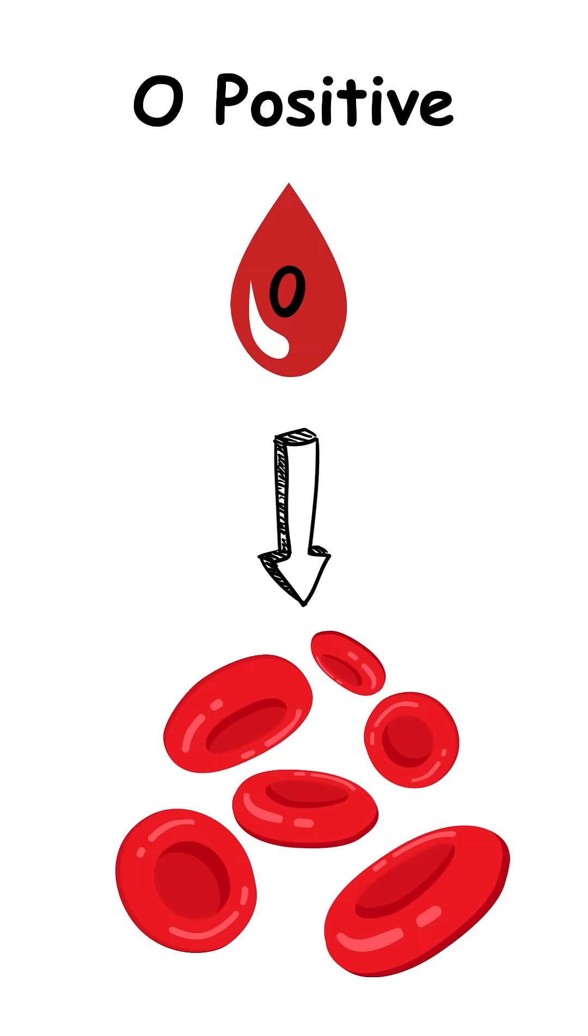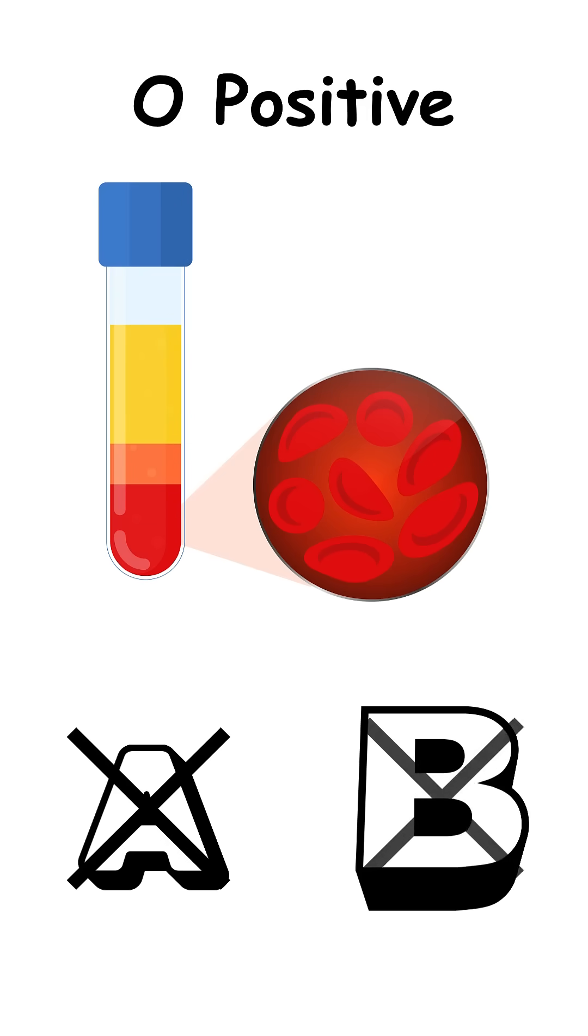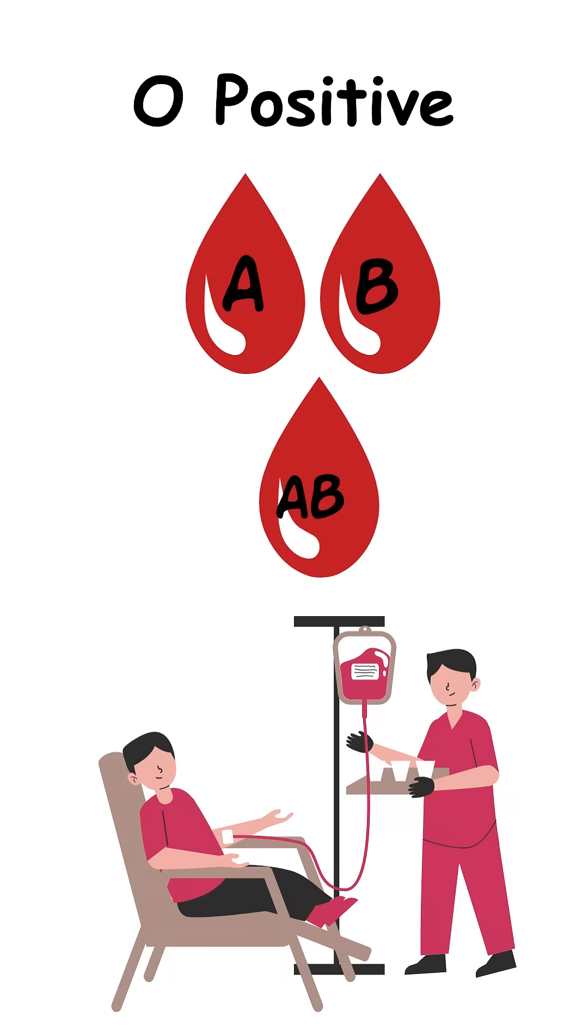The O means your red blood cells have no A or B antigens on their surface. However, your blood plasma contains both anti-A and anti-B antibodies, meaning your immune system will attack A or B blood if given by mistake.